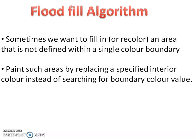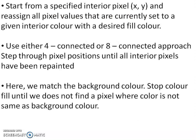Next is the flood fill algorithm. Sometimes we want to fill an area that is not defined with a single boundary color — for example, a triangle filled with more than one color, three types of colors. We paint such areas by replacing a specified interior color with a desired fill color, instead of searching for a boundary color value. The algorithm starts from a specified interior pixel XY and reassigns all pixel values that are currently set to a given interior color with the desired fill color. You can use the 4-connected or 8-connected approach, traversing through pixel positions until all interior pixels have been repainted. We match the background color and stop when we do not find a pixel whose color is the same as the background — we will get different colors.